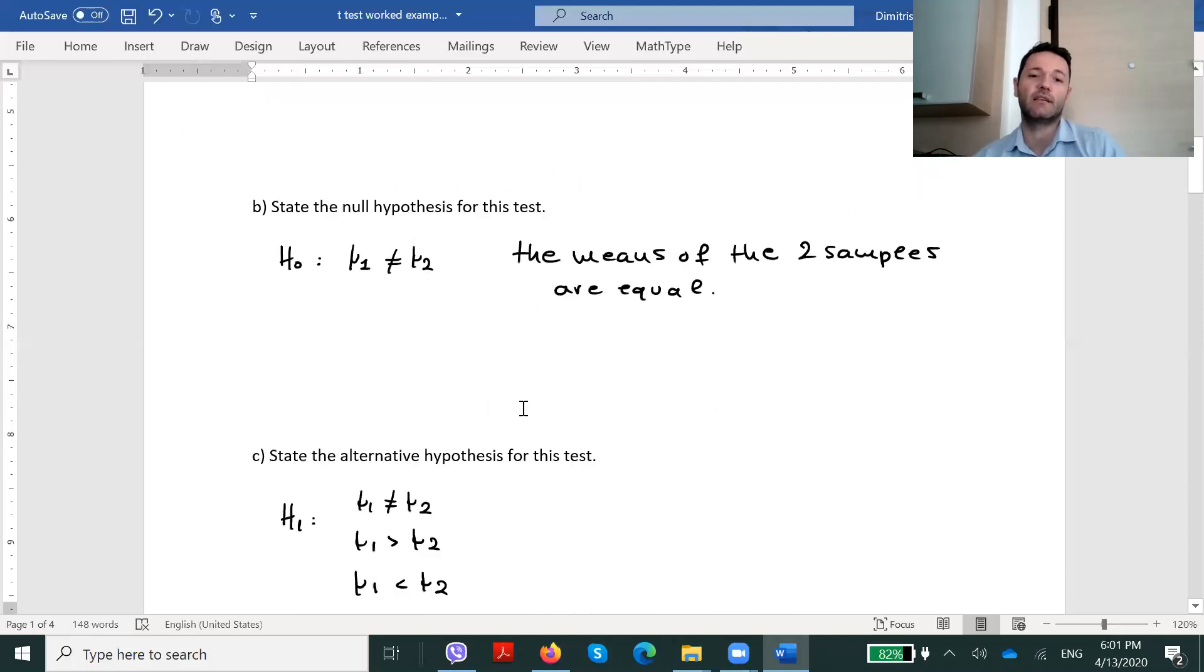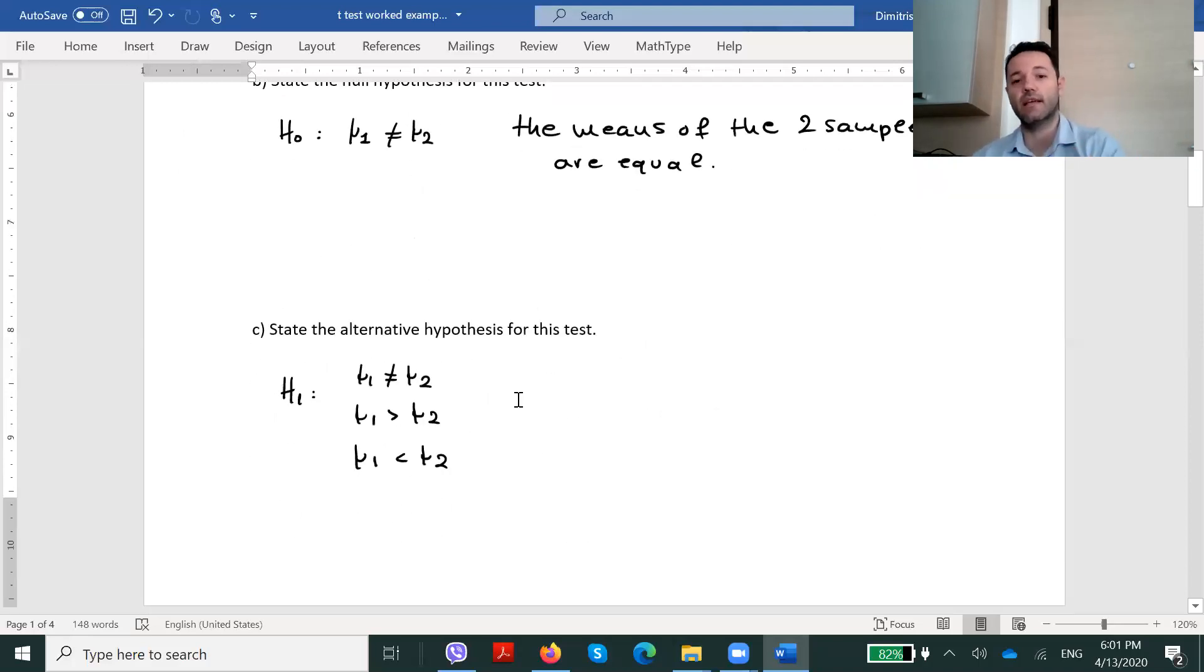So, since he just believes that there is just a difference, our alternative hypothesis will be simply the one stating that they are different. Therefore, written in words, we could write that the means of the two samples are different.